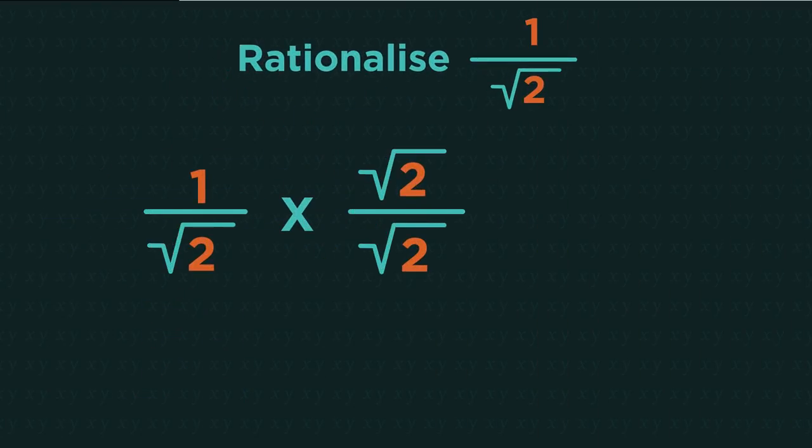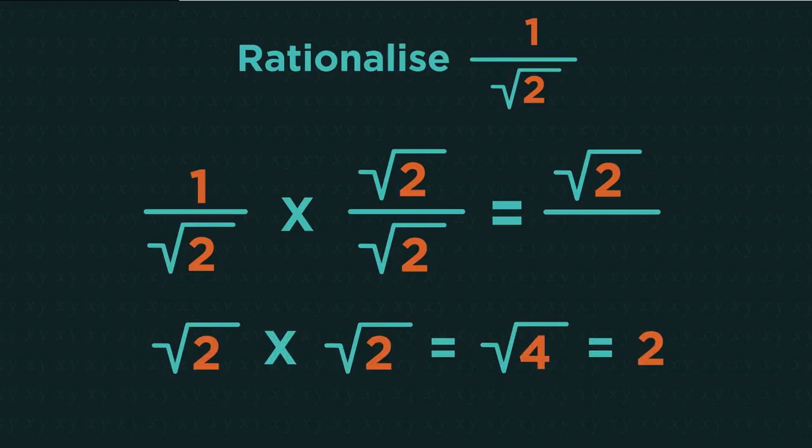Let's have a look at how we move the root. Multiply both the top and bottom by the root. And we get 1 multiplied by root 2, which equals root 2. And root 2 multiplied by root 2, which is 2. Because the rules of surds means that we do 2 times 2, which is 4, and the square root of 4 is 2.